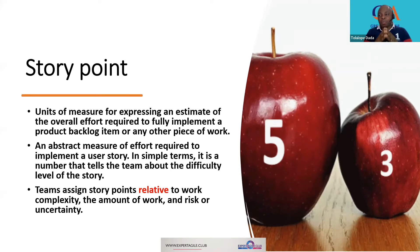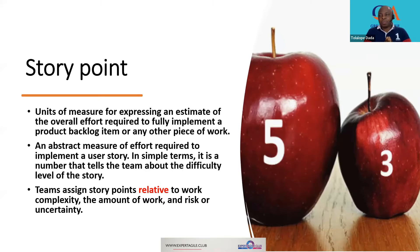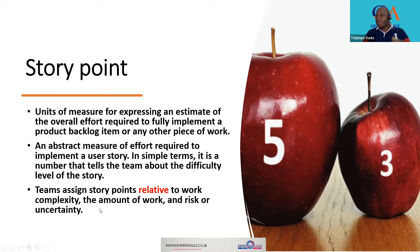It is very important that teams assign story points relative to work complexity, the amount of work, and risk or uncertainty. This relative aspect has been a major concern — many teams have actually removed it from their estimation process, just jumping straight into estimating. But estimation is supposed to be relative. By relative, we mean there is a baseline item that we compare all other items against. For example, if an apple has been assigned three story points, then five story points means how do we arrive at five relative to that three.